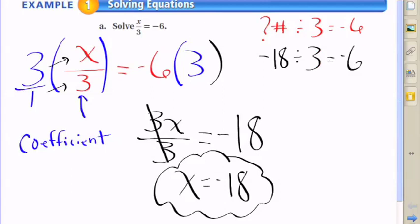And you can check it, see if it works. Negative 18 divided by 3 is indeed negative 6, looking at the original equation.